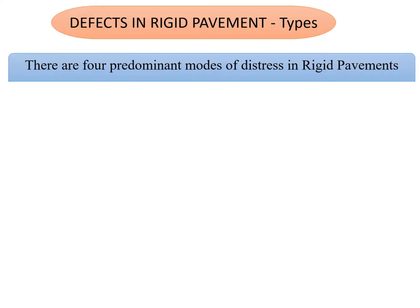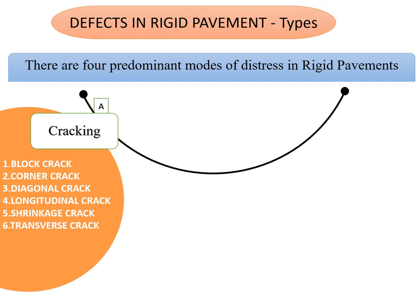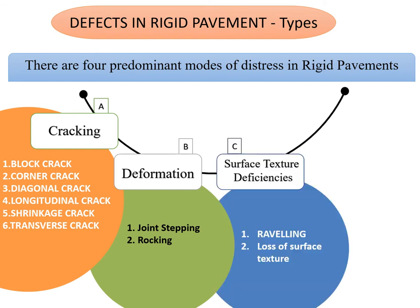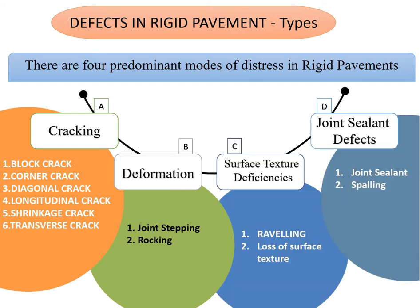Defects in a rigid pavement have four predominant modes of distress: first is cracking, second is deformation, third is surface texture deficiency, and the fourth is joint sealant defects. Today in this module we will take up cracking in detail — covering block cracks, corner cracks, diagonal cracks, longitudinal cracks, shrinkage cracks, and transverse cracks.